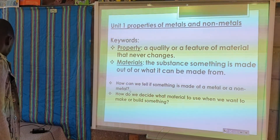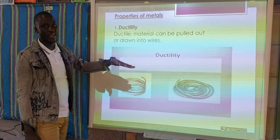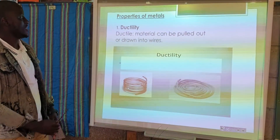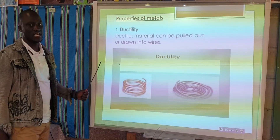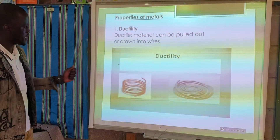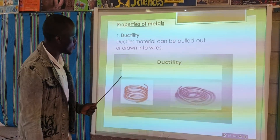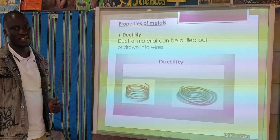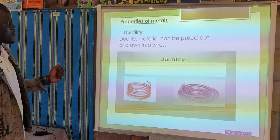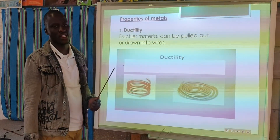Let's quickly get into details. Firstly, we're going to look at metals, and secondly, we're going to deal with non-metals. Property is the quality of materials and the features that they have that they can never change. The first property I want us to focus on is ductility. When we talk about ductility of a material, it means the material can be rolled out into thin wires.